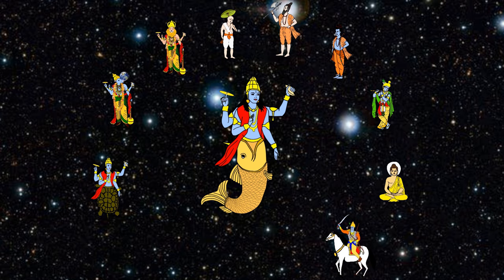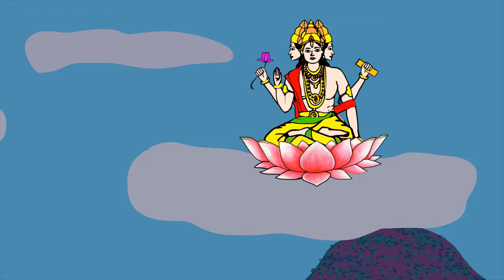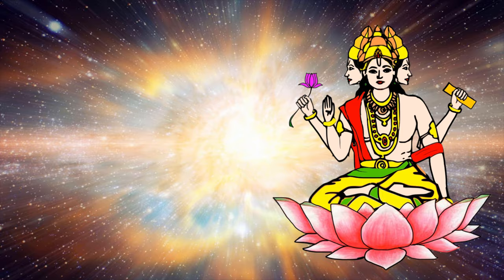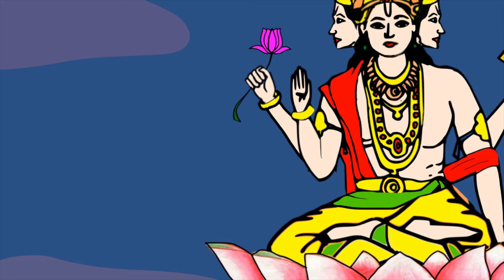The first of them is the fish or Matsya avatar. Let's see why. Once, Lord Brahma finished his day's work of creation and was ready to sleep. His one day, made of billions of earth years, is the time period between creation and destruction of the universe, called a Kalpa.